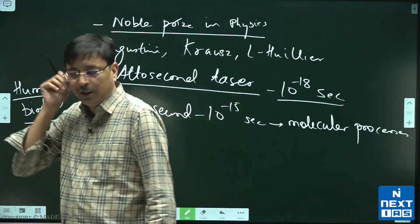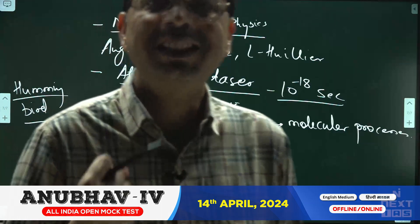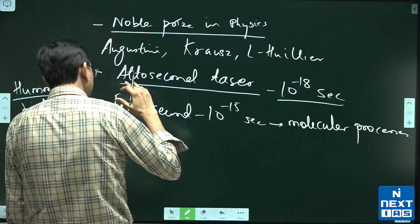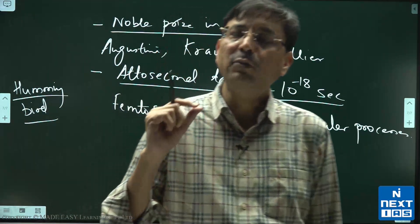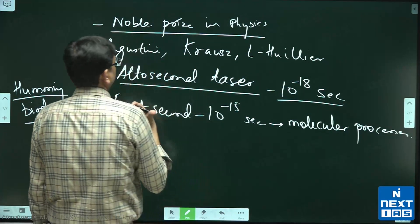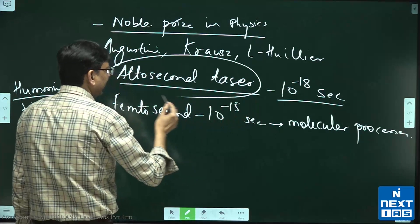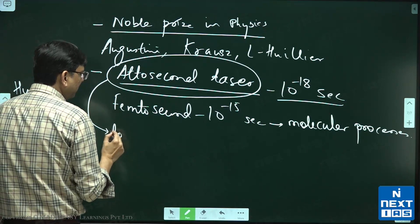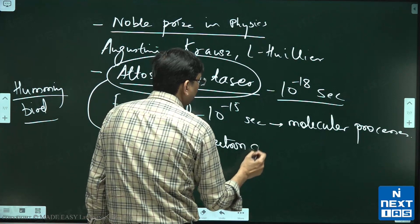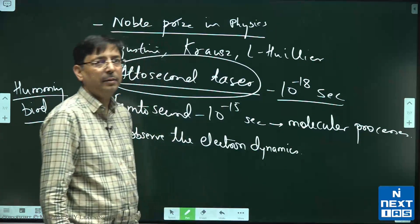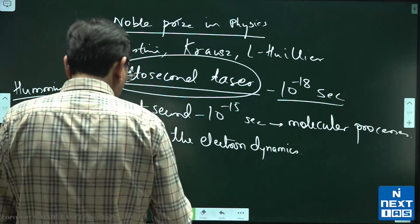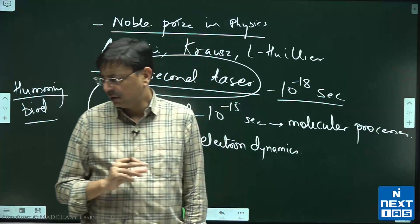Now, we wanted to observe the behavior of electrons. For that, we have to further reduce the time period for which the laser exists. So the significance of the attosecond laser is to observe electron dynamics — meaning how the electron is behaving and how energy changes are taking place in the electron.